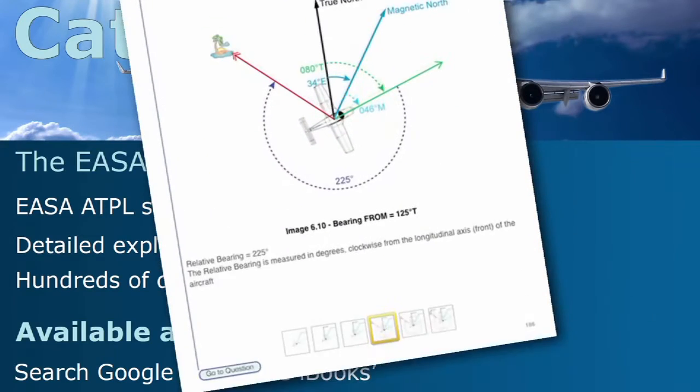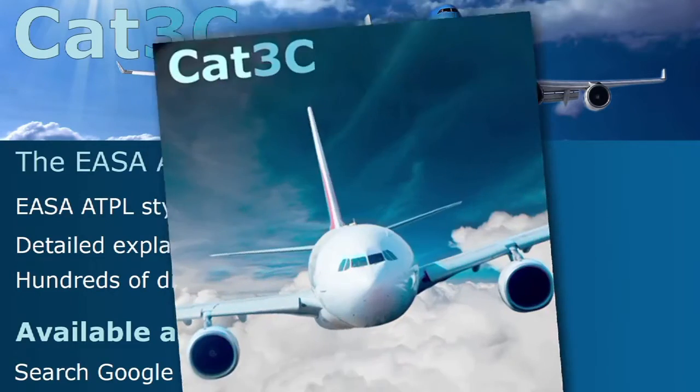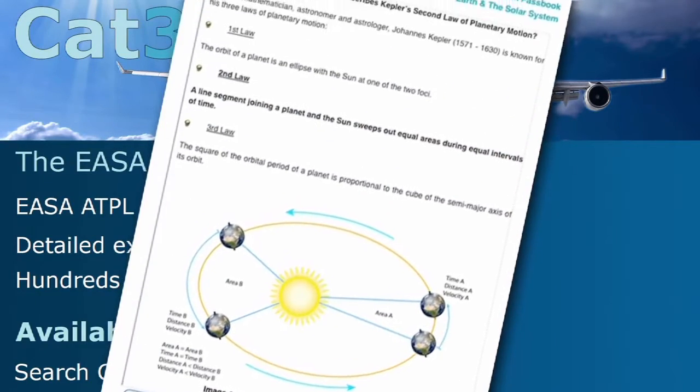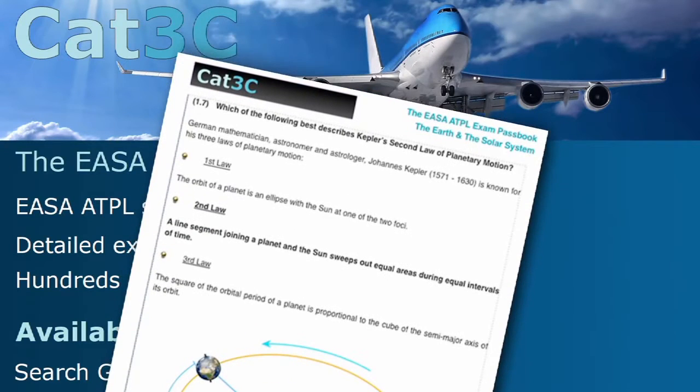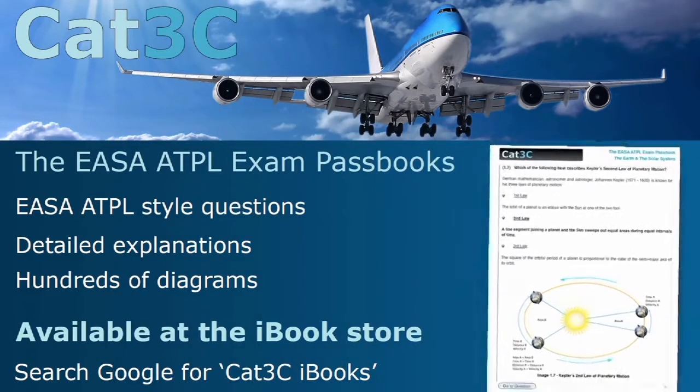The passbooks contain hundreds of exam-style questions and are supported by clear, in-depth explanations and interactive diagrams. The link to the iBooks can be found on the webpage below or at the Cat3C website at the Bookstore tab.